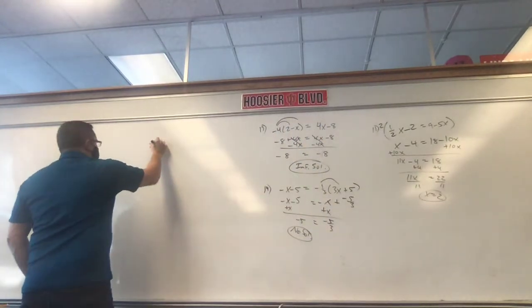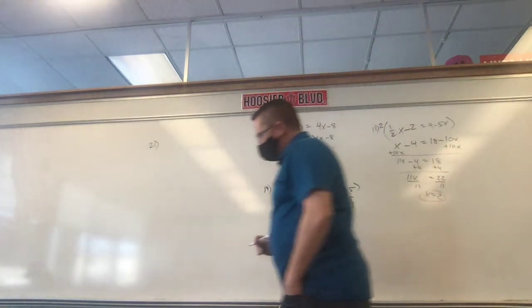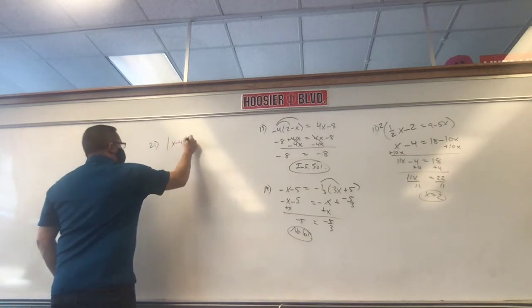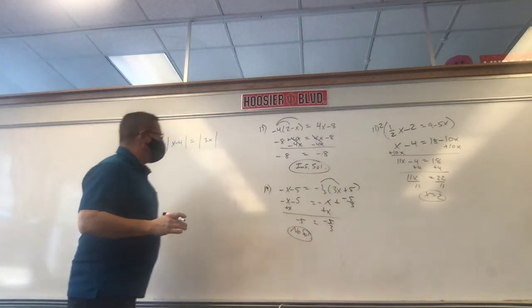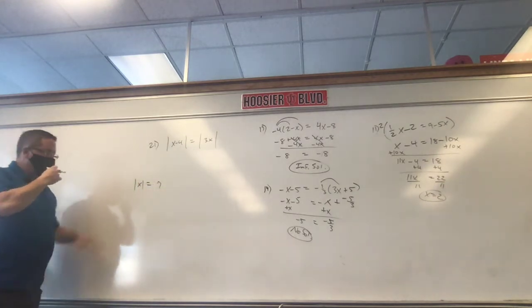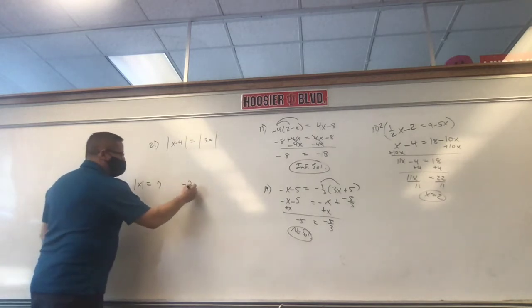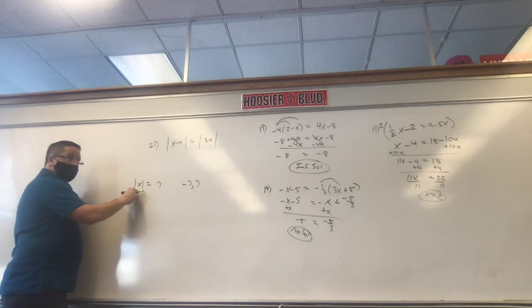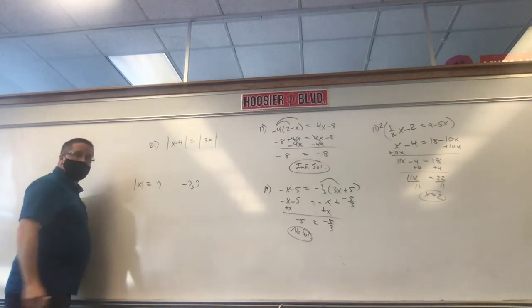It says the absolute value of (x minus 4) equals 3x. What are those bars? Absolute value. In case you forgot: what can you take the absolute value of and get 7? Negative 7 and 7 — because the absolute value of negative 7 is 7 and the absolute value of 7 is 7. So what's inside the absolute value bars could be the value itself or its opposite.